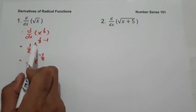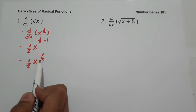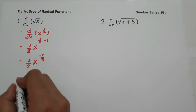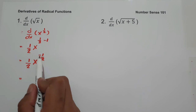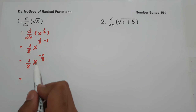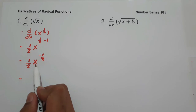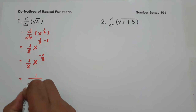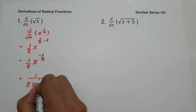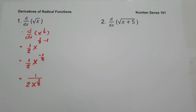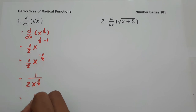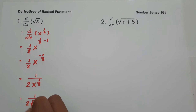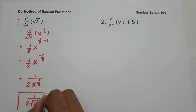Or you can have 1 minus 2, that is negative 1, and then copy the denominator. Since we have a negative sign on the exponent, we are going to eliminate the negative sign and write x in the denominator. So we are going to have 1 over 2x raised to positive 1 half. And to write our final answer, let us have 1 over 2 square root of x. And this will be our answer.